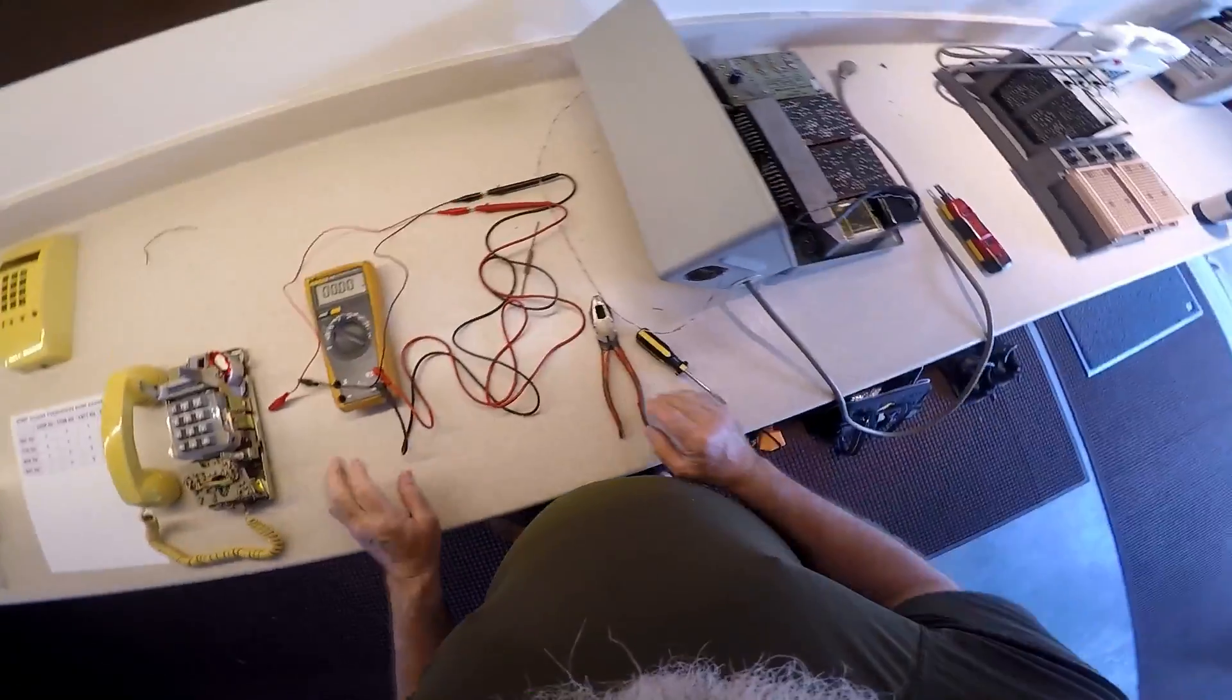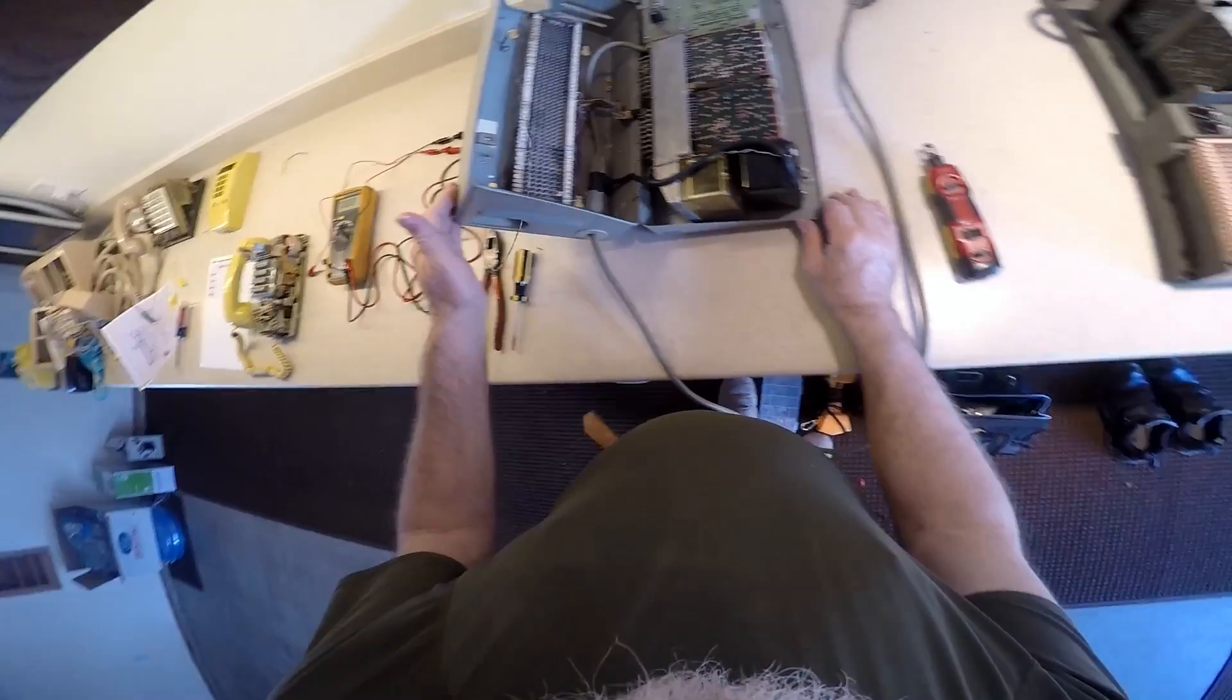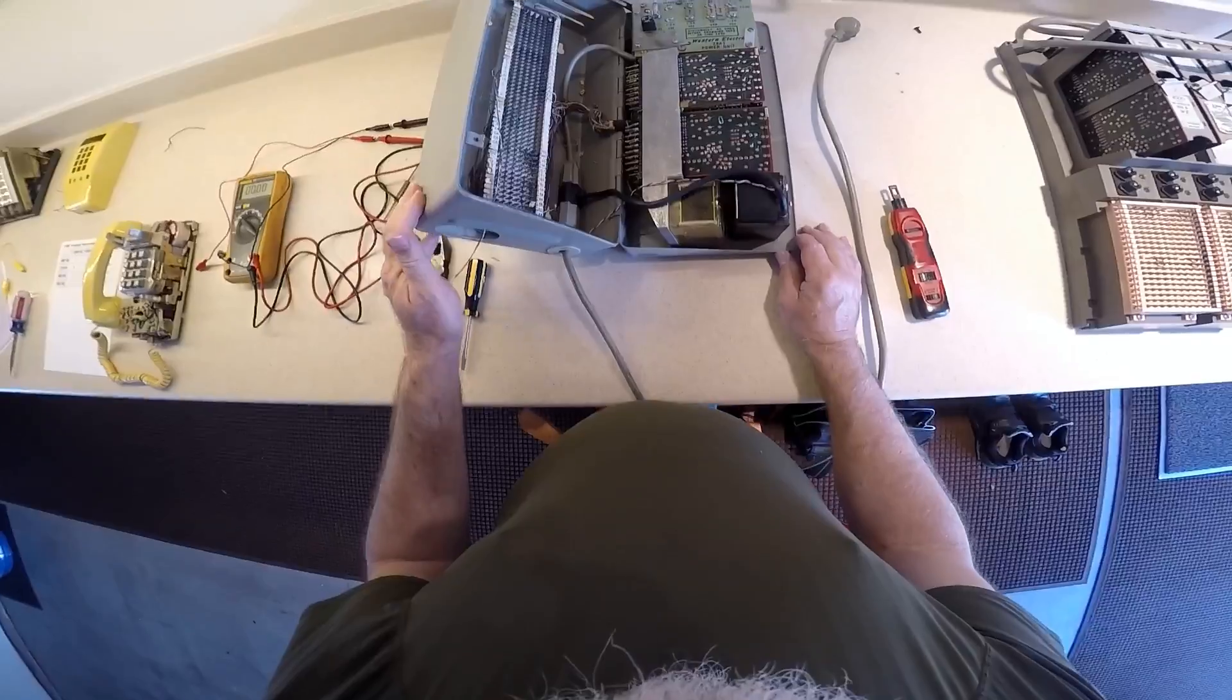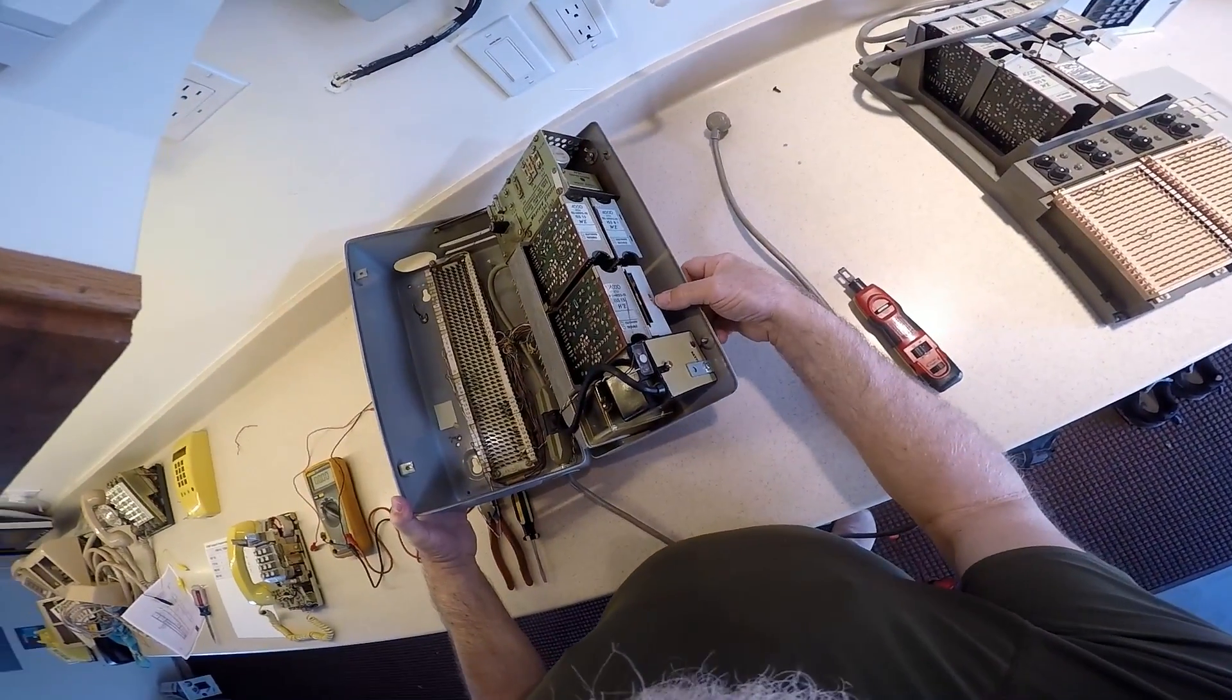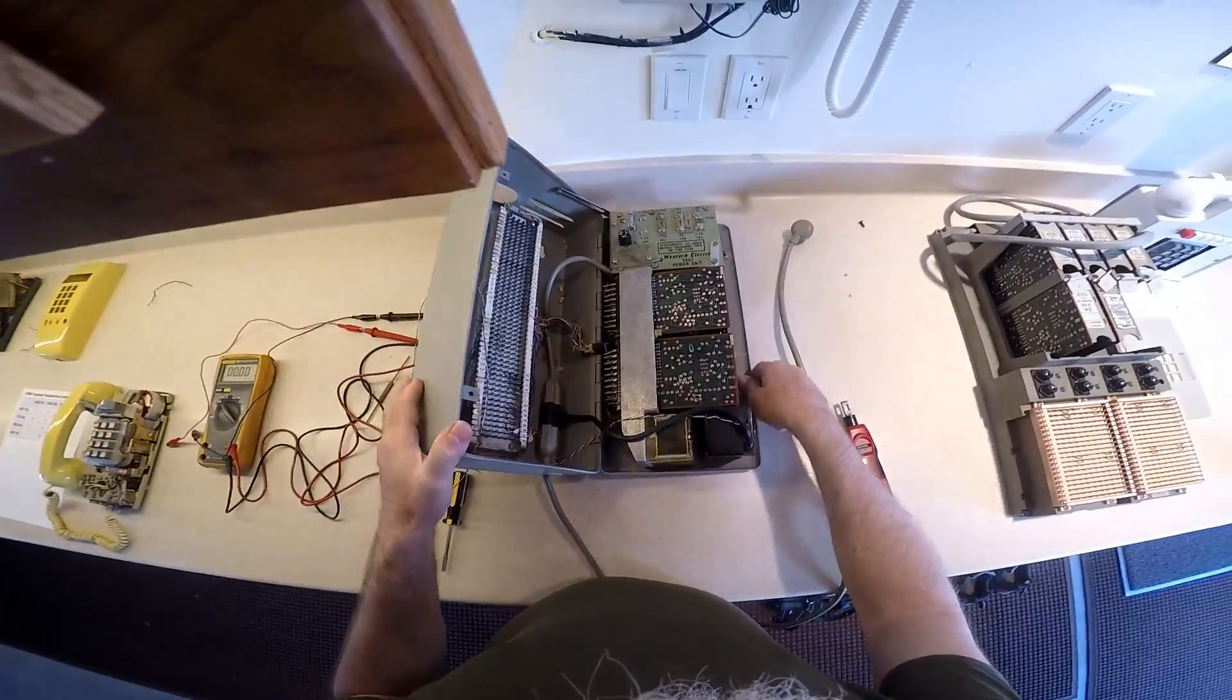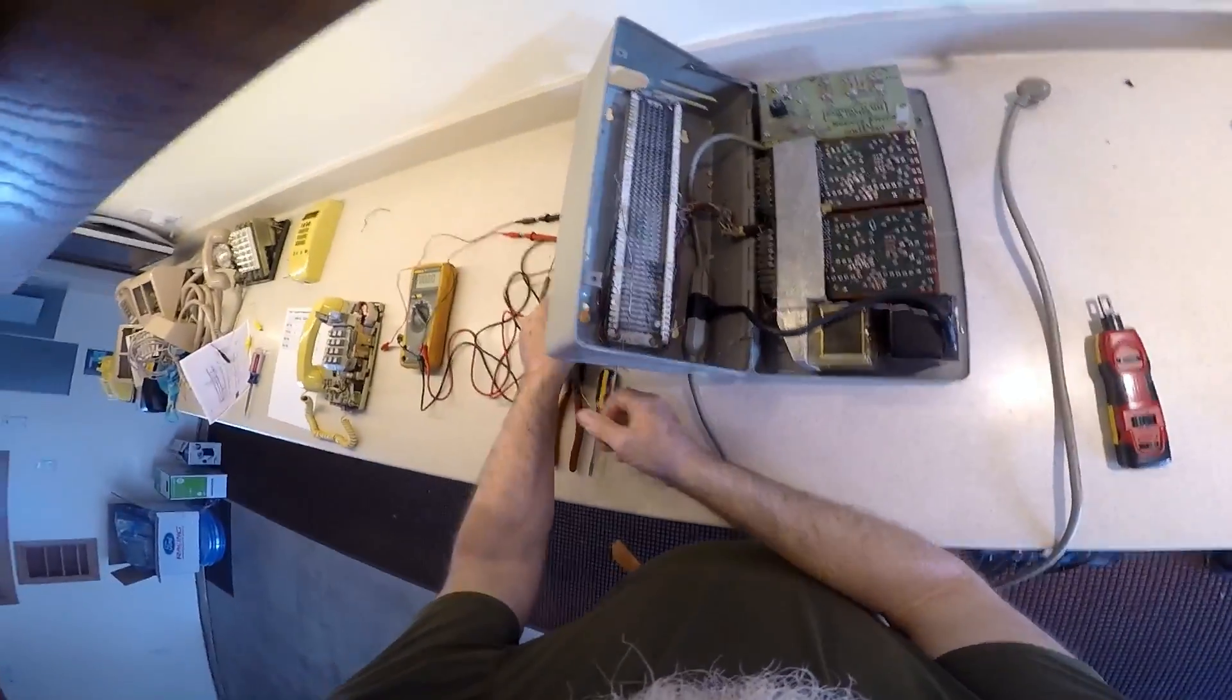Another thing you need is a DC power source. Now what I've done is I've pulled out this shoebox, a 551B key service unit, which is what used to be used to make key telephone systems like in an office work, and I'm using a 401A intercom card in order to produce 24 or 20, in this case 20 volts DC like a talk circuit. And I've got my wire hooked up and I'm going to bring that over and connect it up to the phone.